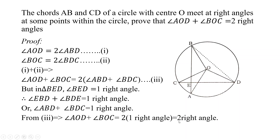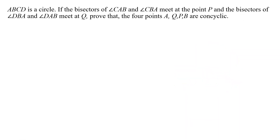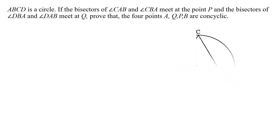That is two right angles. Therefore, angle AOD plus angle BOC equals two right angles, and that is our proof. Now, dear cadets, another exercise. Here, ABCD is a circle.